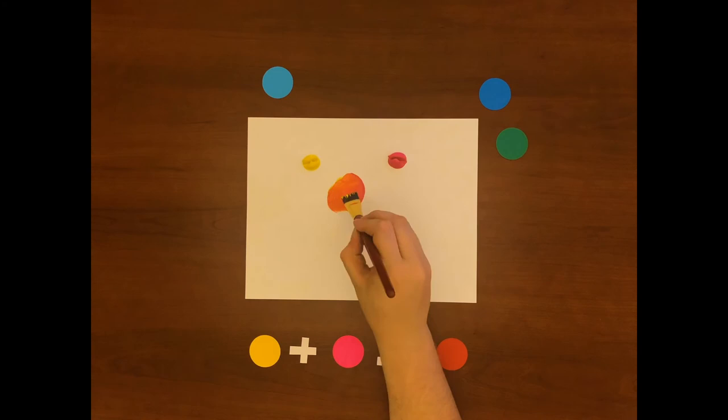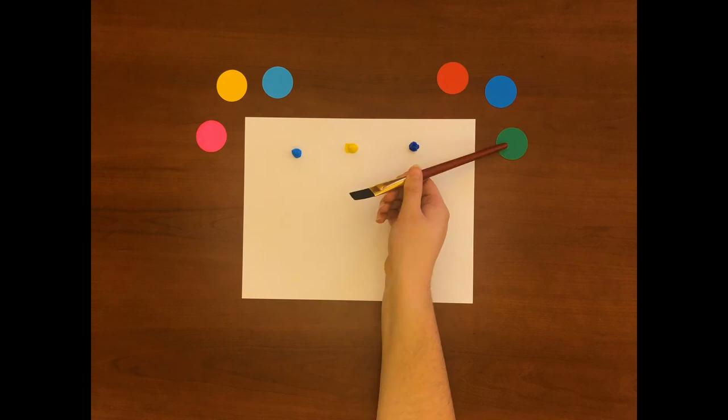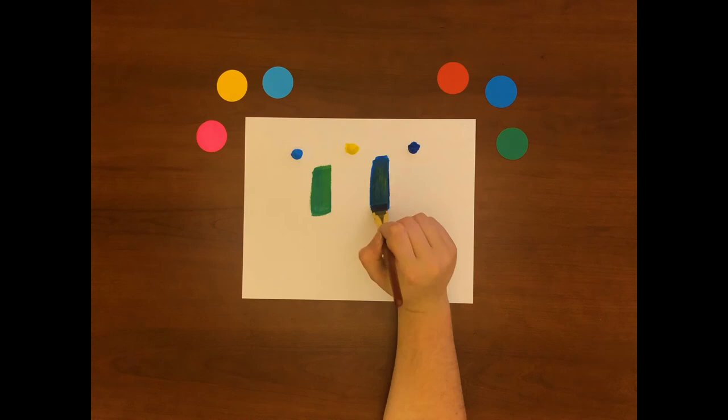Here's an example with green. If you mix cyan and yellow you'll get a vivid version of green, whereas if you mix blue and yellow you'll get green but it'll be desaturated. This is why printers use CMYK because it gives you more vivid colors.